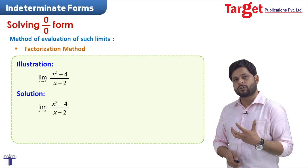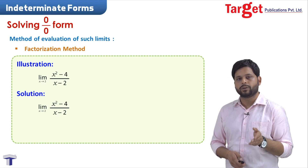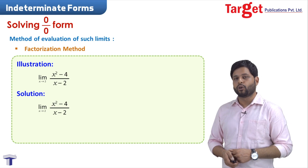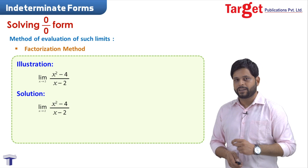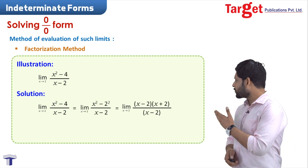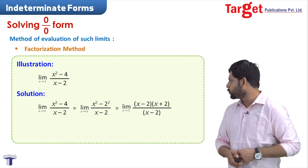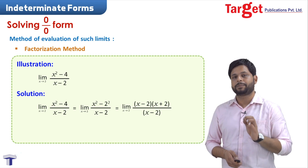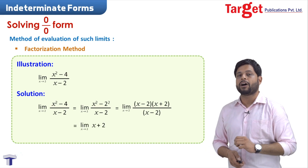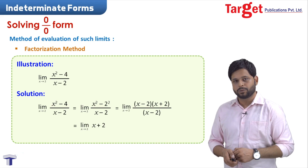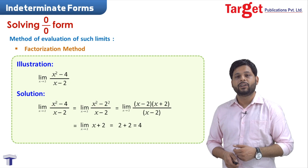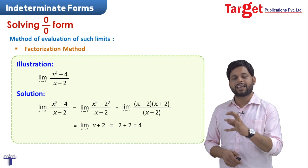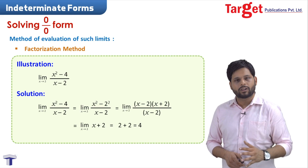To solve the 0/0 form, we use factorization. We take the factors of the numerator: x squared minus 4 is x squared minus 2 squared, which is a² minus b² = (a−b)(a+b). So the numerator becomes (x−2)(x+2) upon (x−2). We cancel x minus 2 from the numerator and denominator, and we are left with x plus 2. Now substituting x equal to 2 gives 2 plus 2, which is 4.